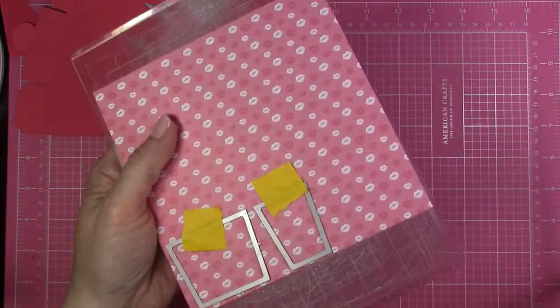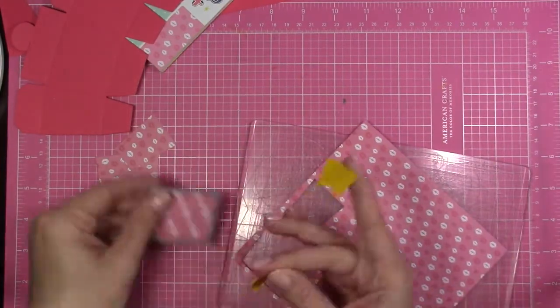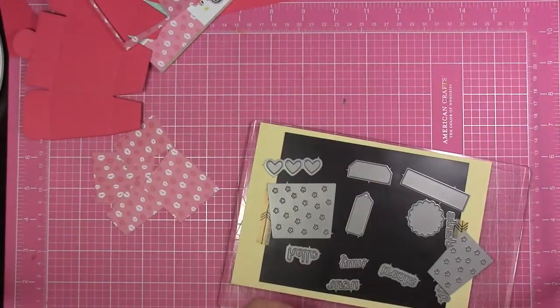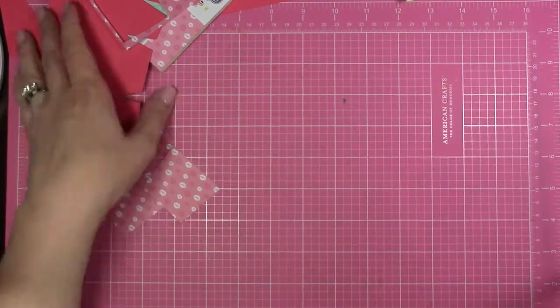I'm going to run that through the Big Shot. I'm going to die cut two of each piece to use on the box, and then I'm just using some adhesive to attach that to it.